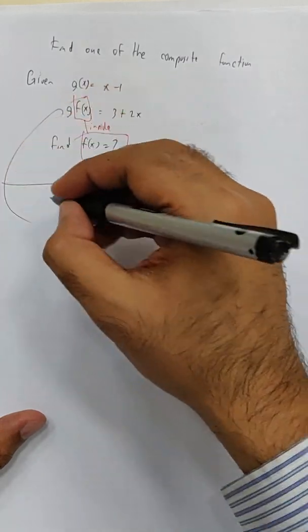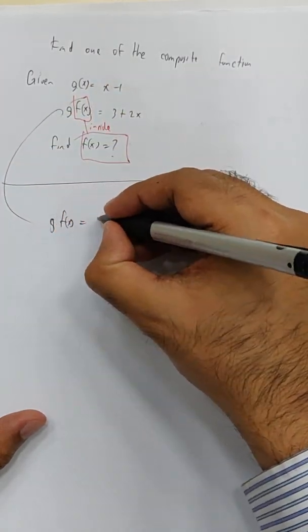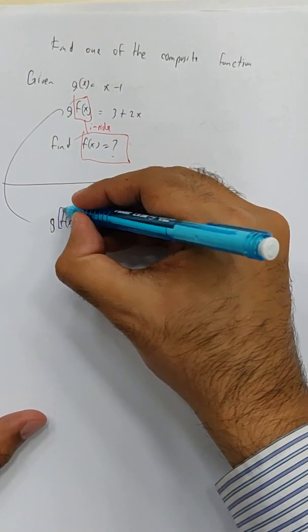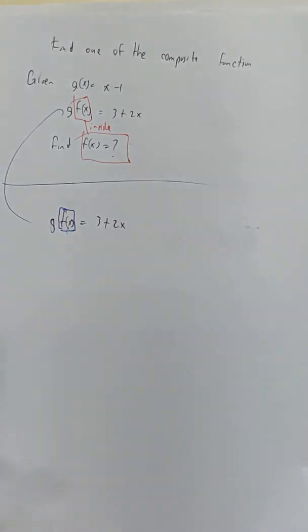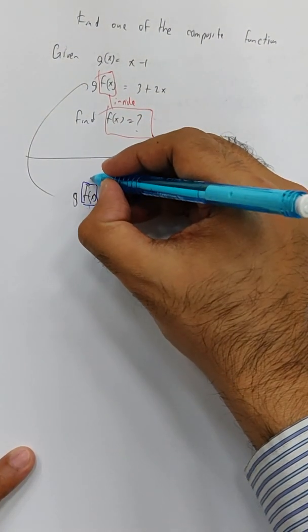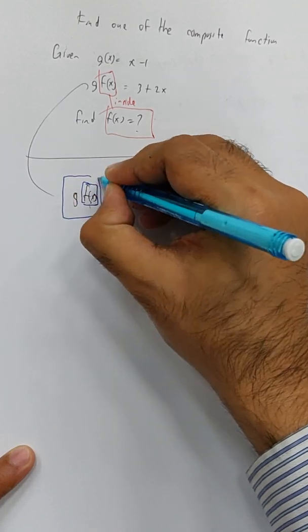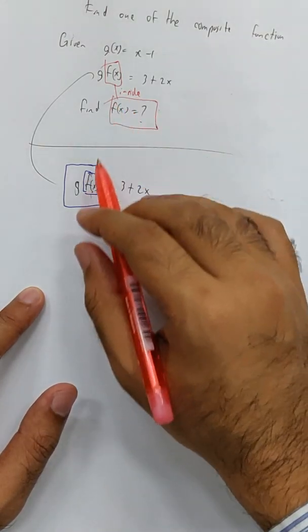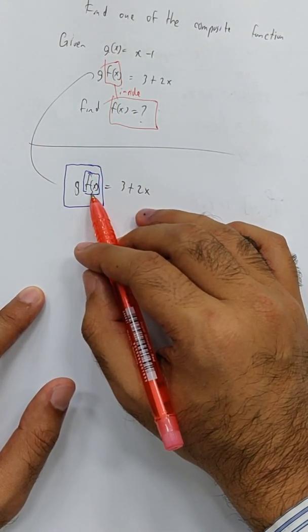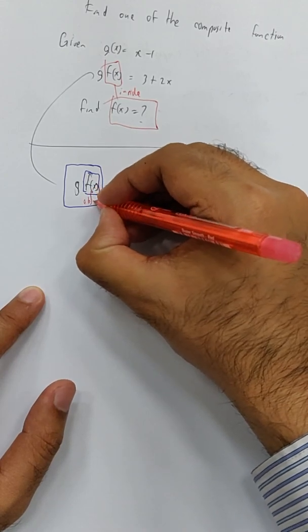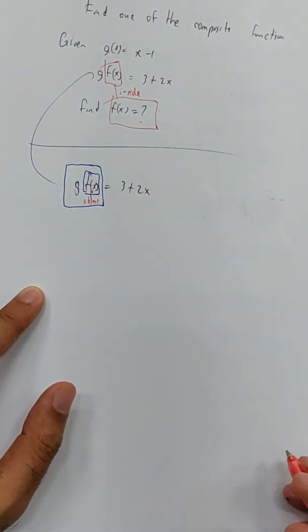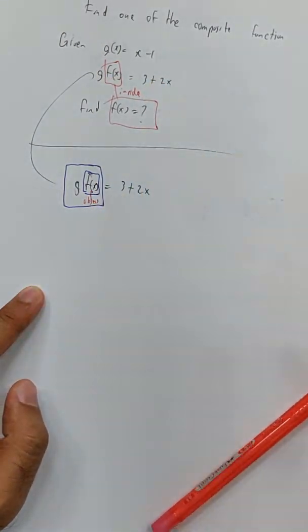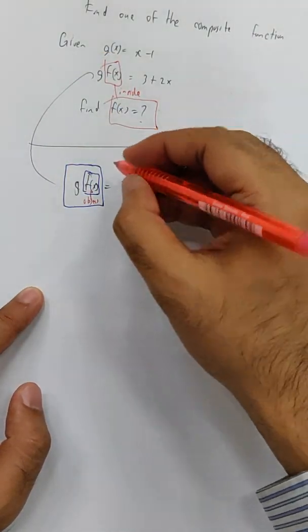So we begin with what we are given here. g(f(x)) = 3 plus 2x. And the only distinct, the inside that we are trying to find. Okay, let's open this one. g(f(x)). And what can I say about the f(x)? f(x) is the object of g. Okay. That's what we did this now. If we said the object. Keep on referring to the wrong things.